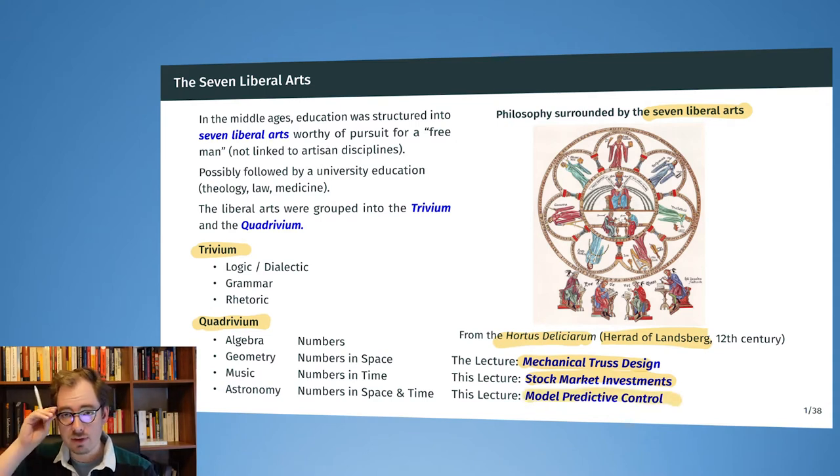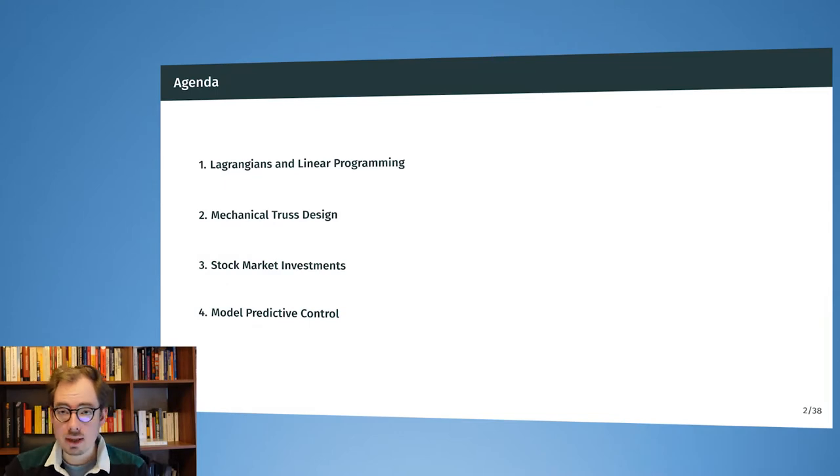So how to take a physical system, reason about its behavior and improve the behavior of a physical system. This will be then the analogon to thinking about numbers in space and time. Before we drop into these three examples, we have one more subject to cover, which is about some difficulties that arise when we use the Lagrangian approach for equality constraints with linear programming.